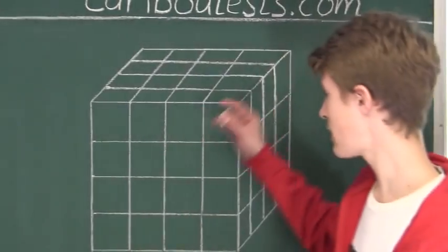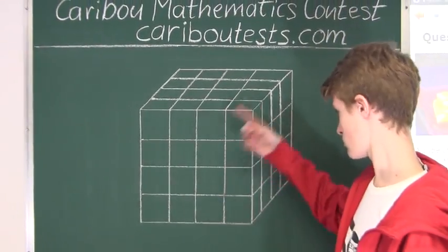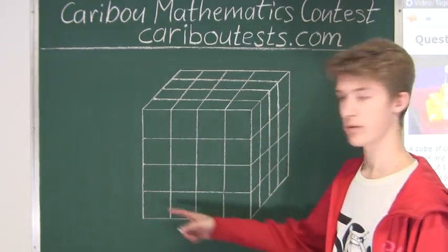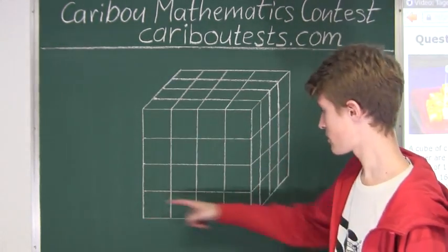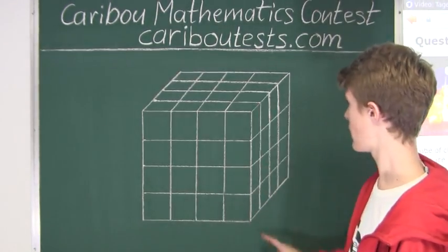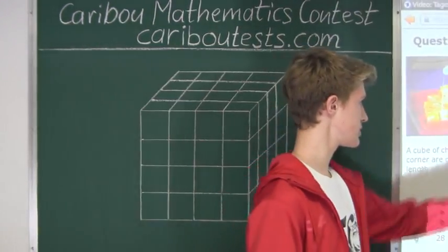What we have in front of us is a figure of the 3-dimensional cube and how it would look like. So we have the width being 4 cm, the length being 4, and the height being 4 cm.